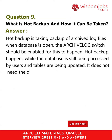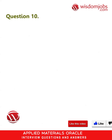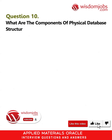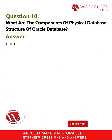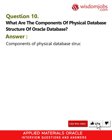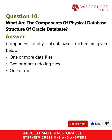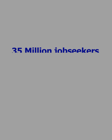Question 10: What are the components of the physical database structure of an Oracle database? Answer: The components of the physical database structure are: one or more data files, two or more redo log files, and one or more control files.